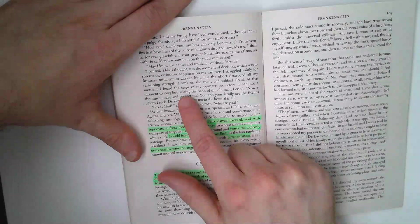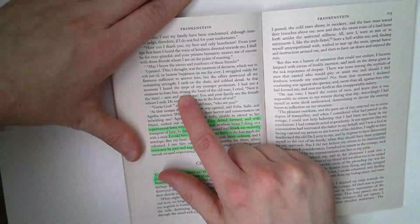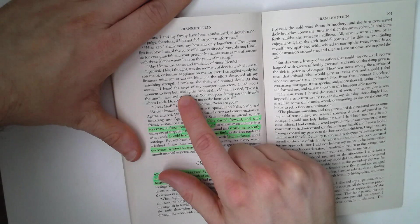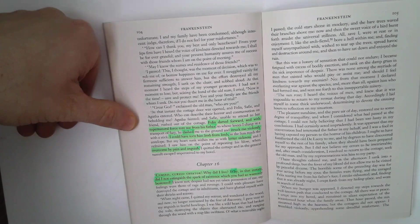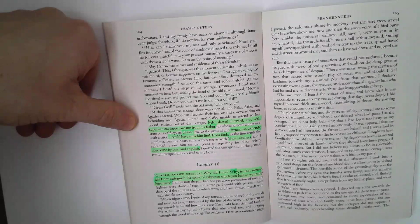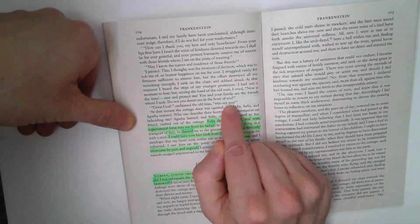And ultimately, when he says, the old man, we're on page 104, now is the time, save and protect me. You and your family are the friends whom I seek. Do not desert me in the hour of your trial. The desperation, the seizing, that aggressive verb. And then at the moment, great God, exclaimed the old man, who are you?